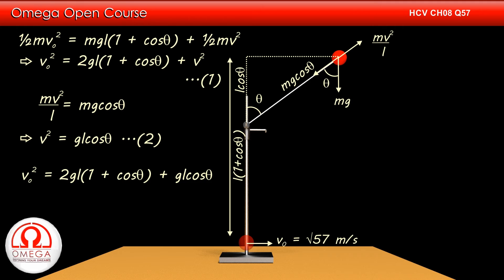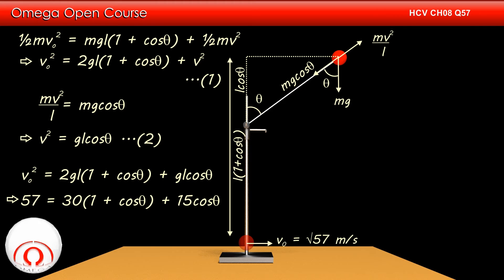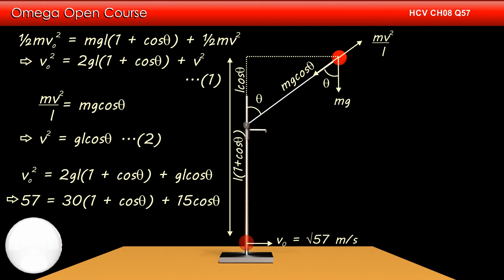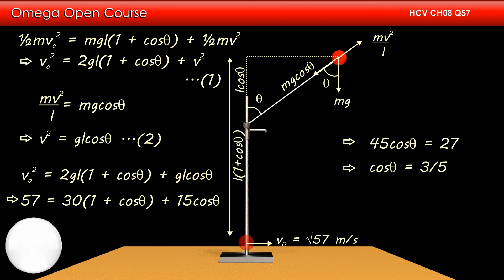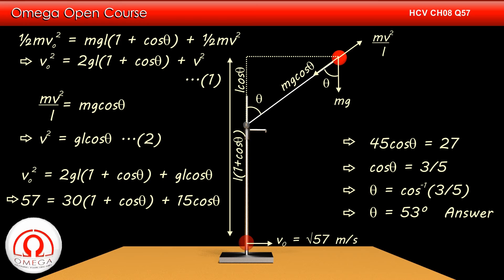Putting V² = gL cos theta into Equation 1, we get V₀² = 2gL(1 + cos theta) + gL cos theta. Putting the values of V₀, g, and L, we get 57 = 30(1 + cos theta) + 15 cos theta. Simplifying, we get 45 cos theta = 27, or cos theta = 3/5. Thus, theta = cos⁻¹(3/5) = 53 degrees. This is the answer to part A of the question.